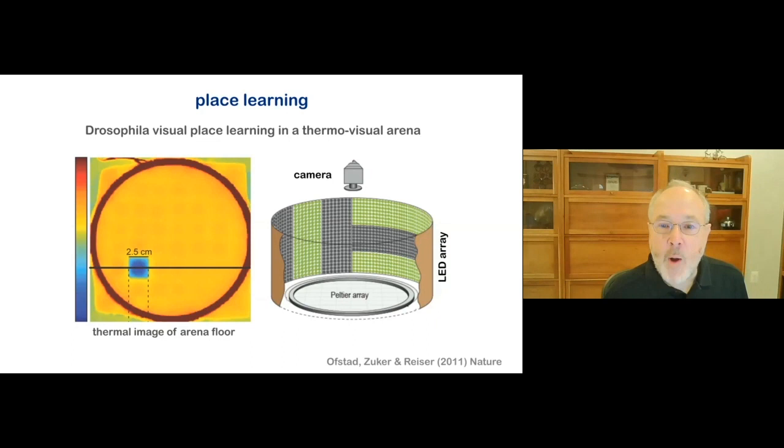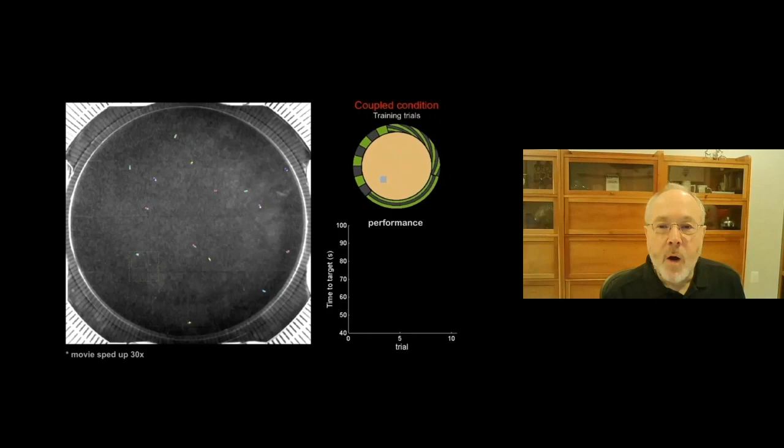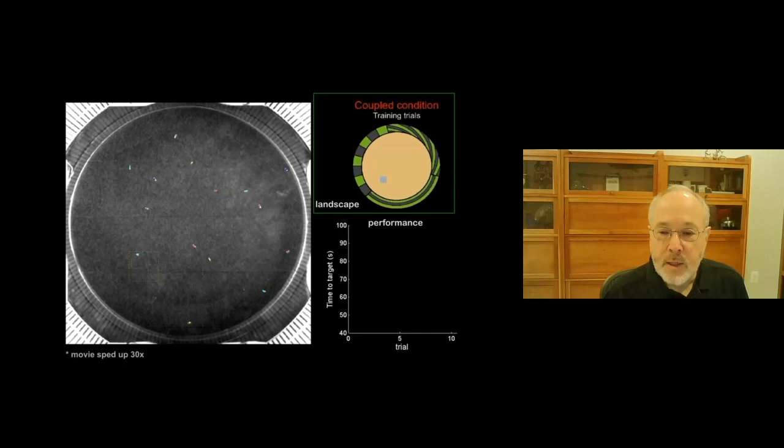Flies can use landmarks to remember the position of a safe spot, a cool spot in an otherwise uncomfortably warm floor. In this video, you can watch the flies learn to associate the visual landscape with the position of the cool spot. The position of the cool spot is shown by the dotted box in the arena. The landmarks rotate when the cool spot moves, so the relationship between the landmarks and the cool spot is always the same. The flies just have to use those landmarks to quickly find the cool spot.